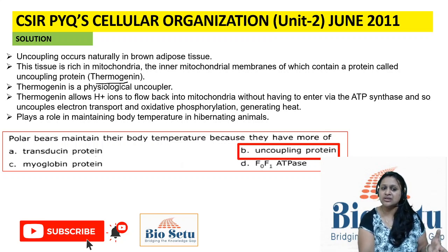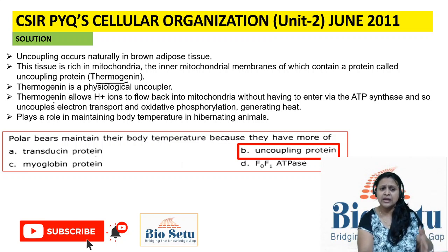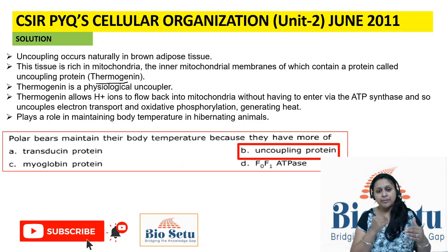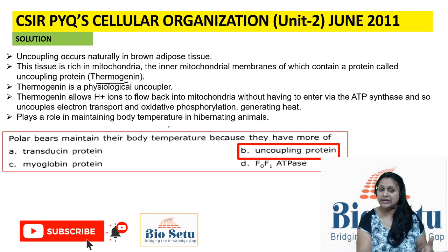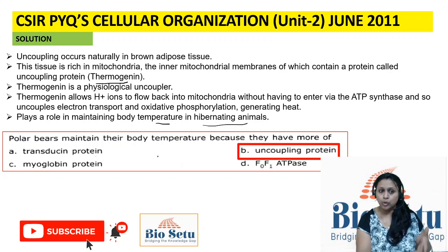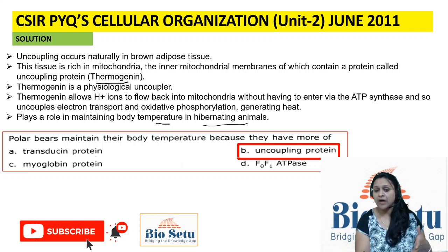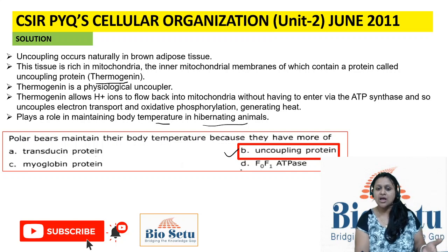Thermogenin, a physiological uncoupler, allows hydrogen ions to travel from the intermembrane space to the matrix of the mitochondria through an alternate route, resulting in heat generation instead of ATP. It plays a very important role in maintaining body temperature in hibernating animals such as polar bears. So the answer is B.